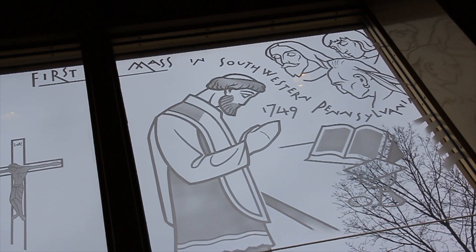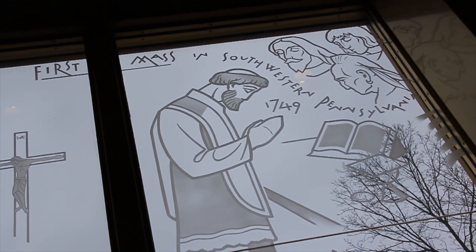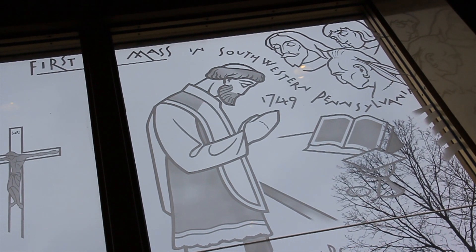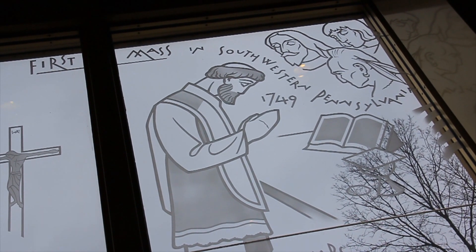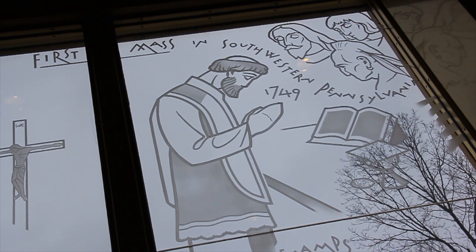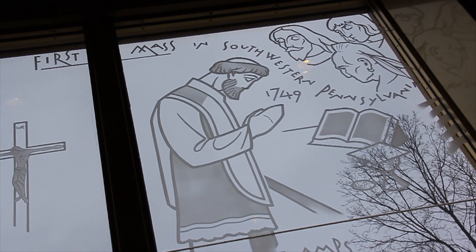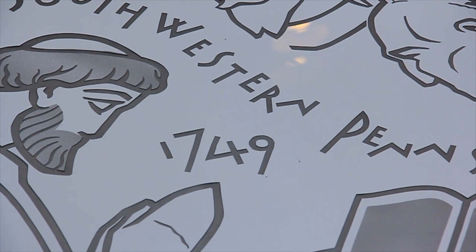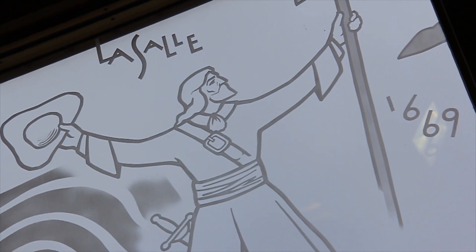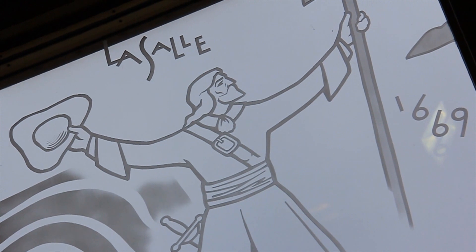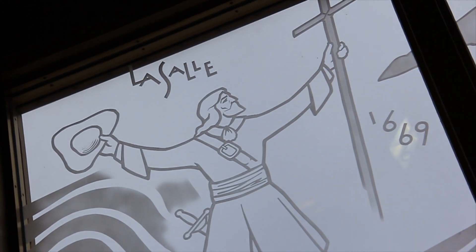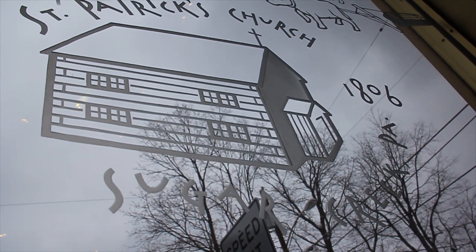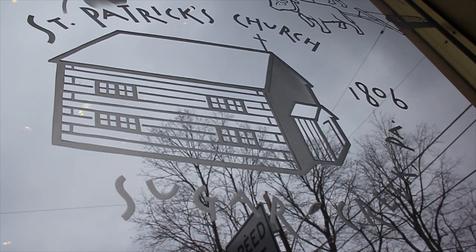On the left wall, when facing the shrine, is a series of nine etched windows that illustrate the history of the Catholic Church in this area of Pennsylvania, from the time of the Native Americans through the colonial period to the founding of the Church at Sugar Creek, and finally the construction of the First and the Present Church.